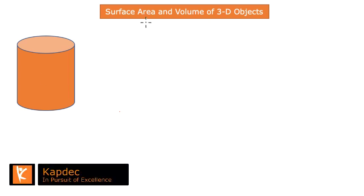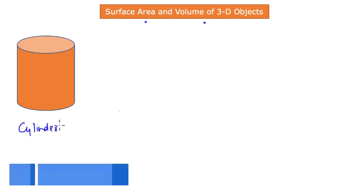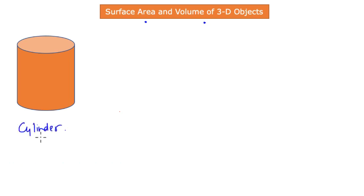How do you compute the surface area and volume of a 3D object known as a cylinder? The picture you see right here — a cylinder is different from polygons in the sense that it has no straight edge.